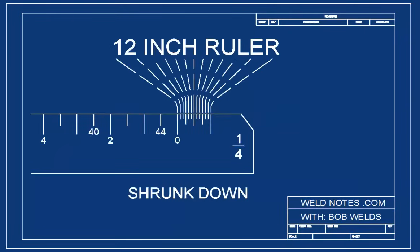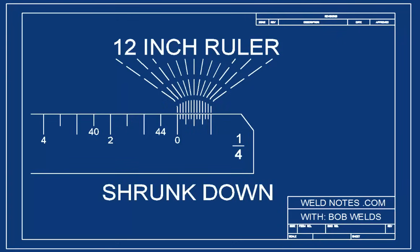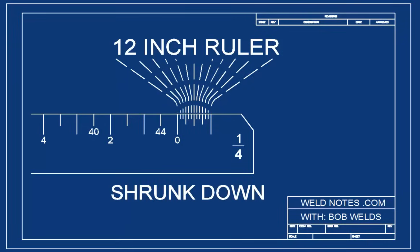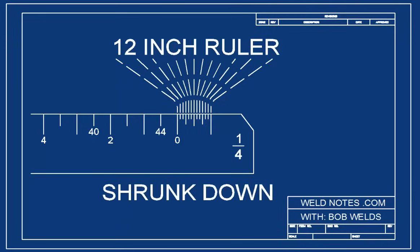One of the keys to understanding a scale like this is to see that the part where you get the inches, the end with the small marks, is really just an ordinary 12-inch long ruler that has been shrunk down to the scale you're using. The hardest part is figuring out what each small mark means.